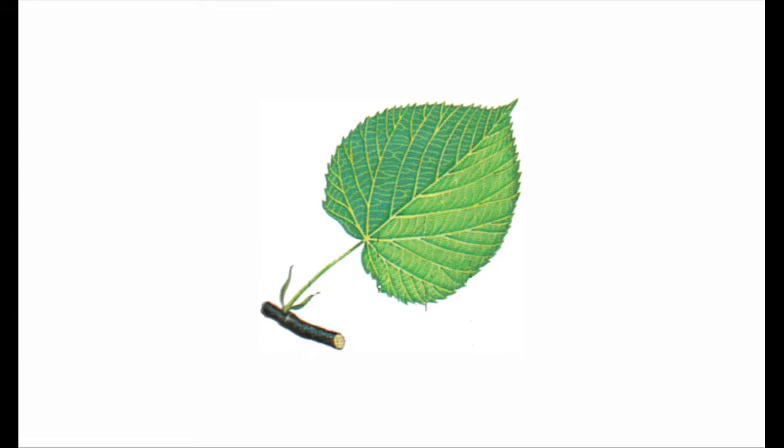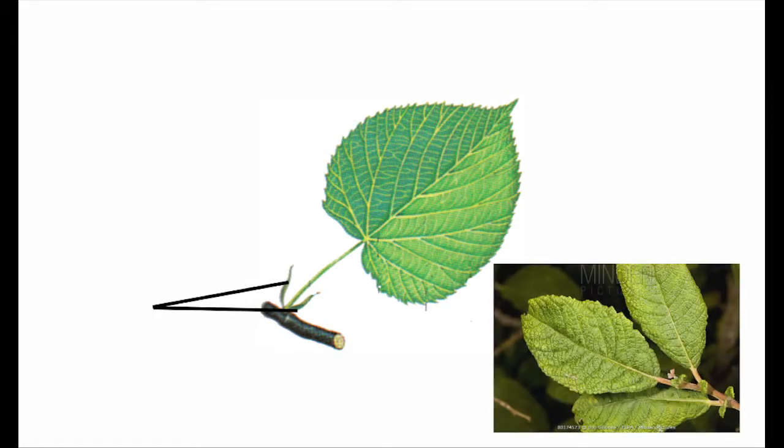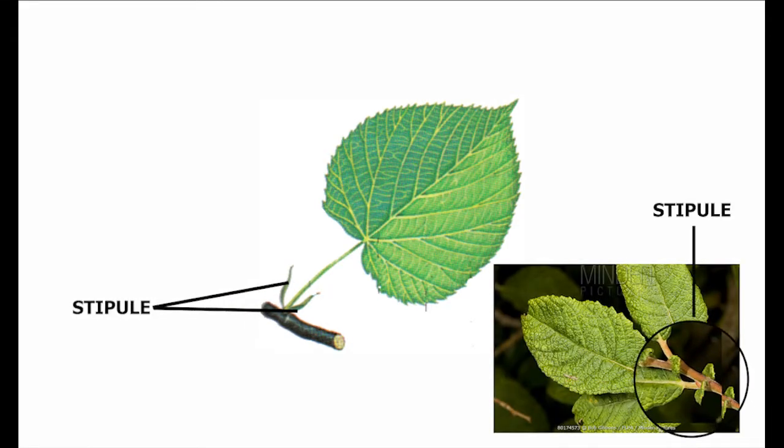5. Stipule. Leaves of some plants possess a pair of lateral outgrowths on the base, on either side of auxiliary bud. These are called stipules.